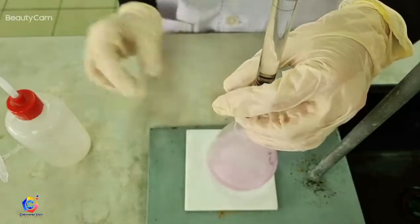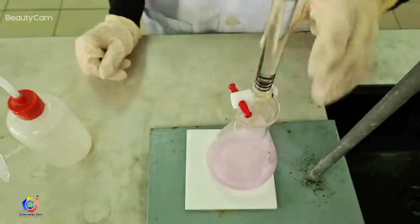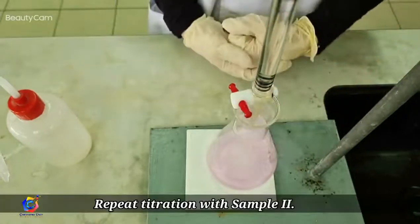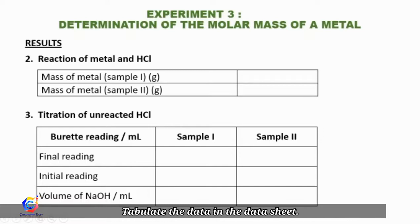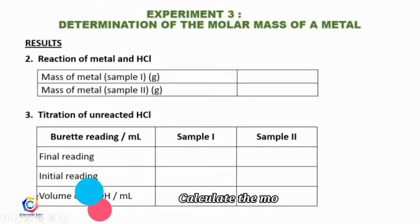Tabulate the data in the data sheet. Now you should be able to calculate the molar mass of metal M. Good luck!